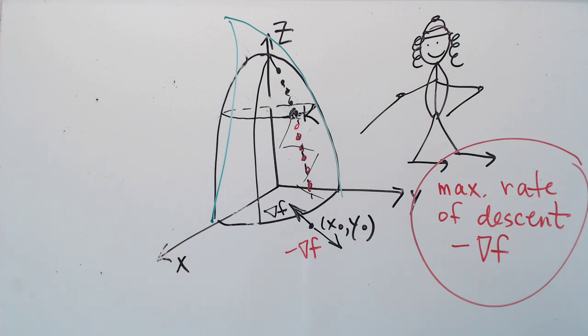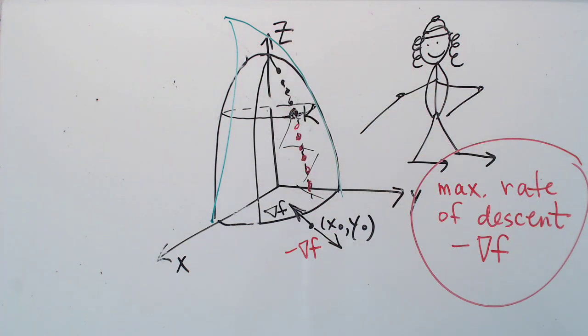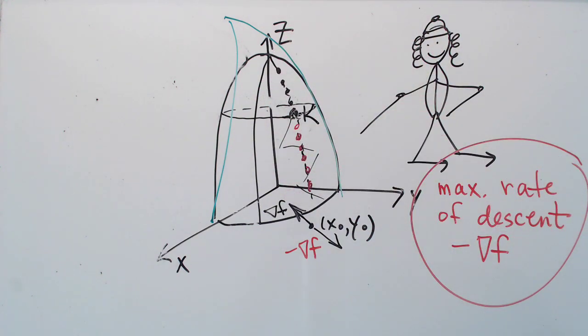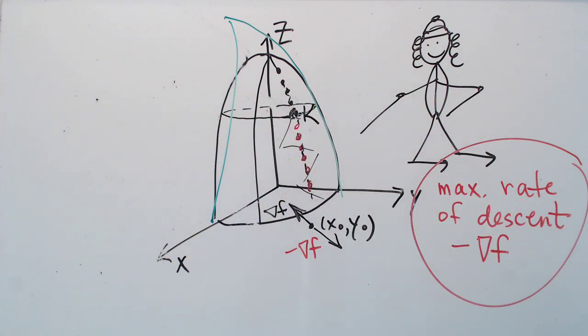Now this property of the gradient is extremely important. If you've ever seen water trickling down a mountainside, from a stream perhaps, it always takes the path of maximum descent. That means that at any given point, the water will travel in the direction of the gradient. And many of the fundamental applications of the gradient depend on those properties.